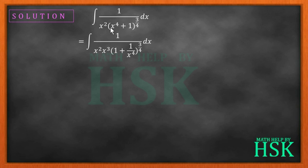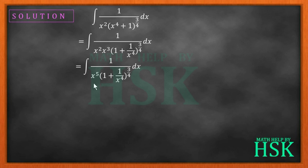So on solving I'm going to get x cubed, and 1 doesn't contain any term of x to the power of 4, so this has to be divided by x to the power of 4. On simplifying these two terms I'm going to get this as 1 upon x to the power of 5 into 1 plus 1 upon x to the power of 4, whole raised to the power of 3 by 4.